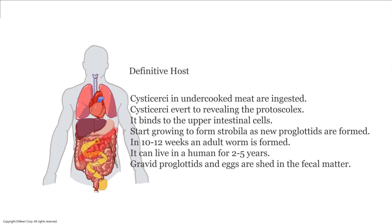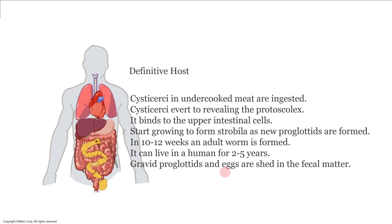Once established, gravid proglottids and oncosphere eggs are shed in the host's stool. It is also possible for the infected person to auto-infect themselves: if they scratch the anal area, don't wash their hands, and touch their mouth, they ingest the eggs — giving themselves both taeniasis (adult worm) and a younger-stage infection simultaneously.